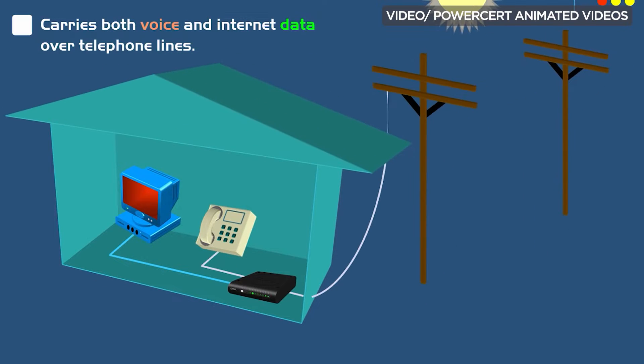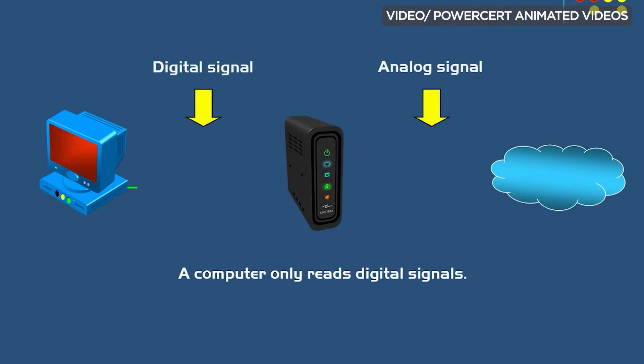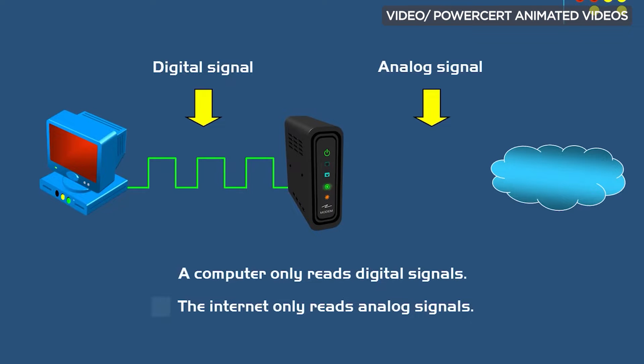The modem started out during the dial-up era where connections ran through the telephone lines. The phone lines were originally meant for voice calls and used an analog signal. The dial-up modem translates the analog signal to a digital signal and vice versa, when it's receiving or sending information over the telephone lines — thus, the term modulation and demodulation.